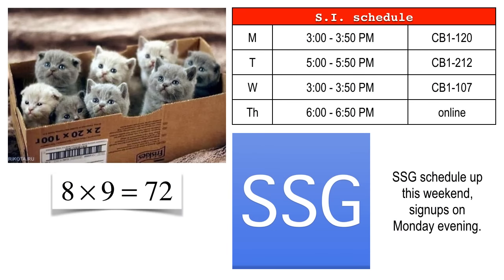SSG signups will be Monday evening. I've got meeting info from a lot of the SSG leaders but not everybody yet. You SSG leaders, one more round and that'll be good — then you'll be released from the final. If you have a box of kittens — eight times nine — 72 lives in a box of kittens.